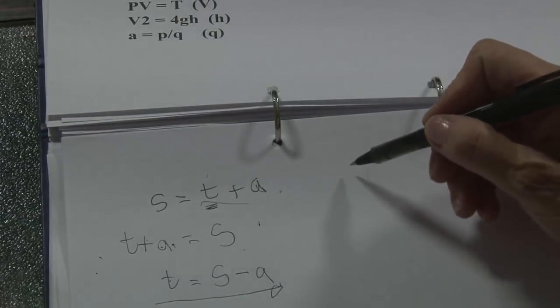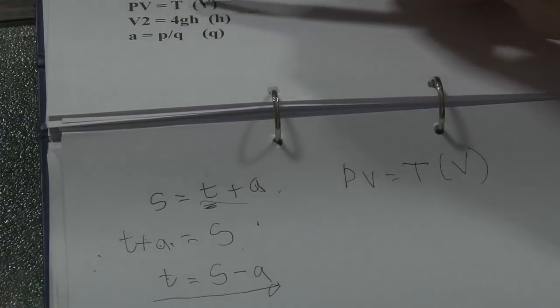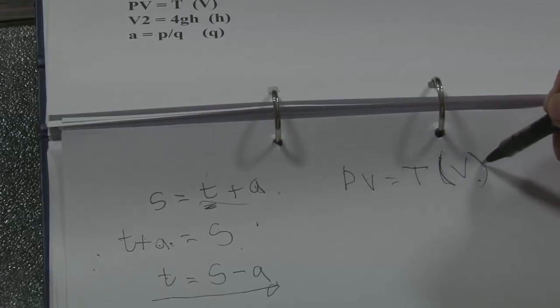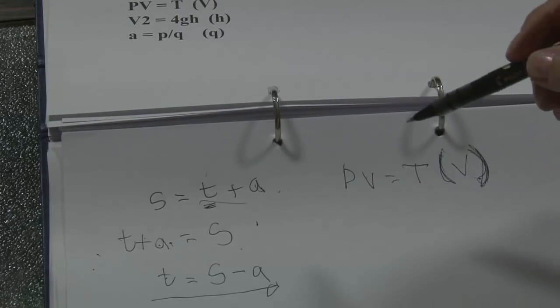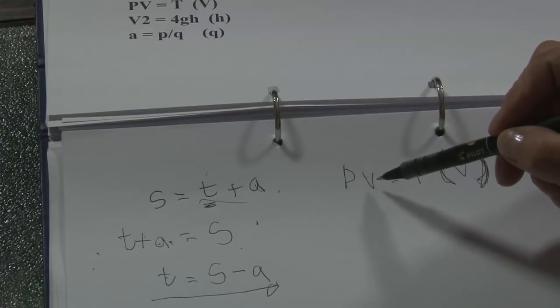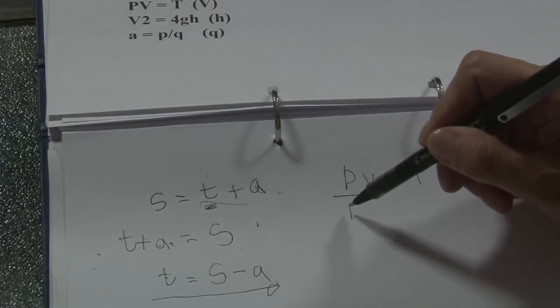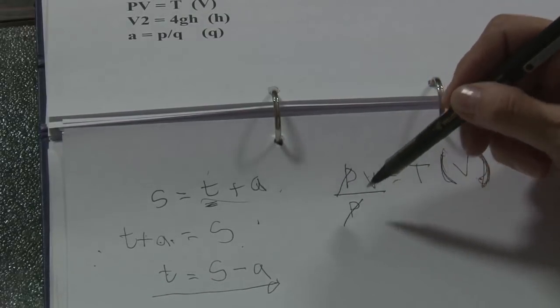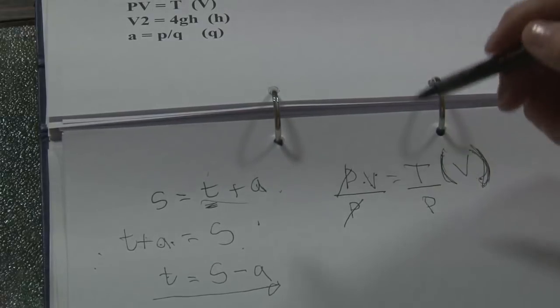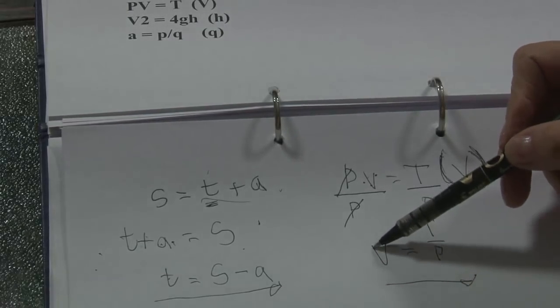The next one: PV equals T, and V should be the subject of the formula. This is multiplication — there's an invisible multiplication sign between P and V. The opposite of multiplication is division. I want V on its own, so I divide by P so that I can cancel P. What I do on this side I do on this side. So my answer is V equals T over P. Now V is the subject of the formula.